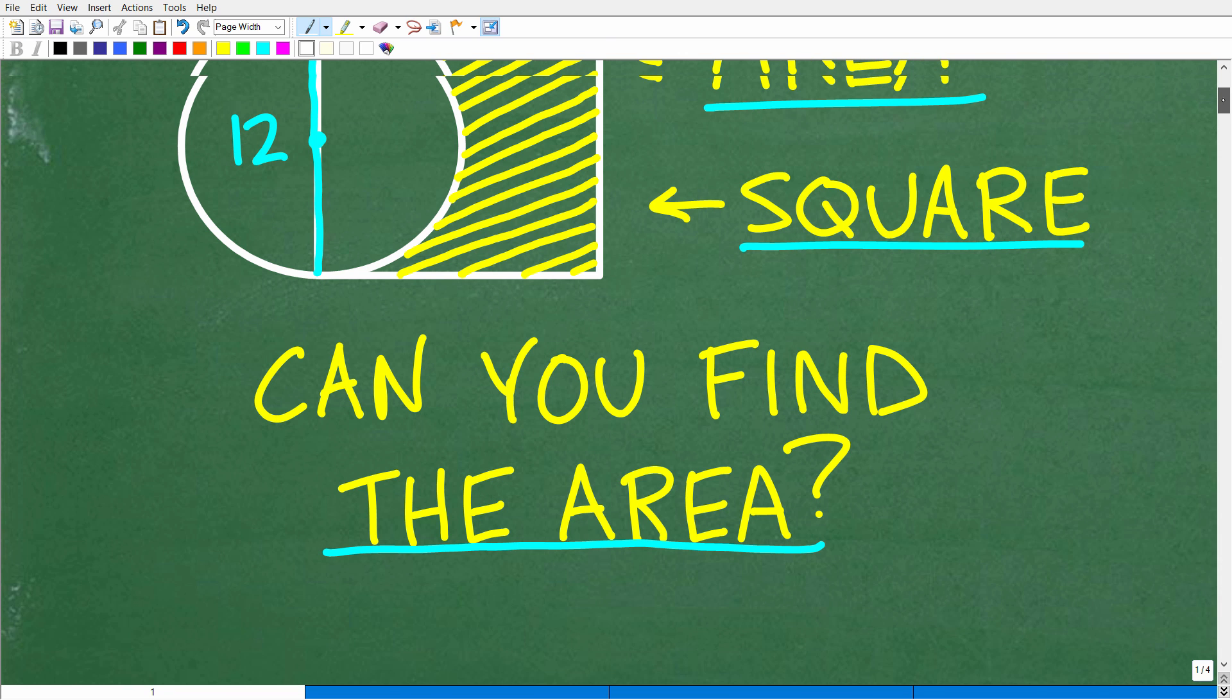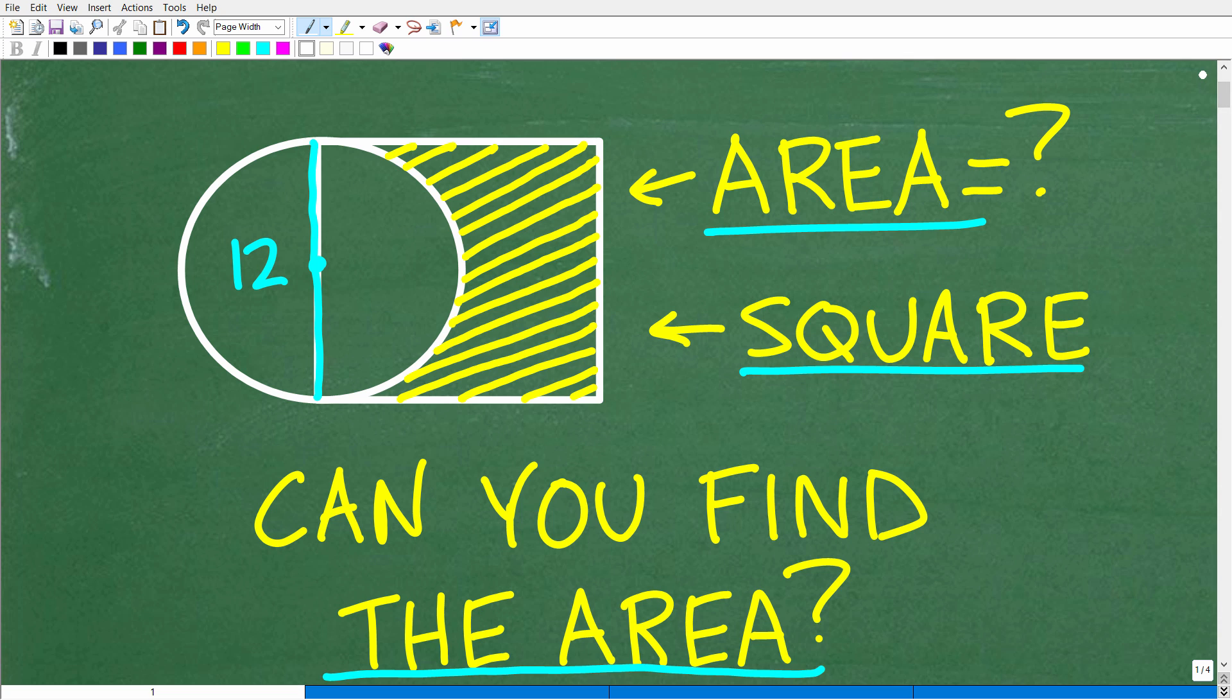So hopefully you understand the nature of the question. We're trying to find the area of this region highlighted in yellow. Now, we just know that this is 12 units long. We don't have any specific units of measure like inches or centimeters, but we do need to be mindful that area is in units squared. So let's go ahead and take a look at the answer.